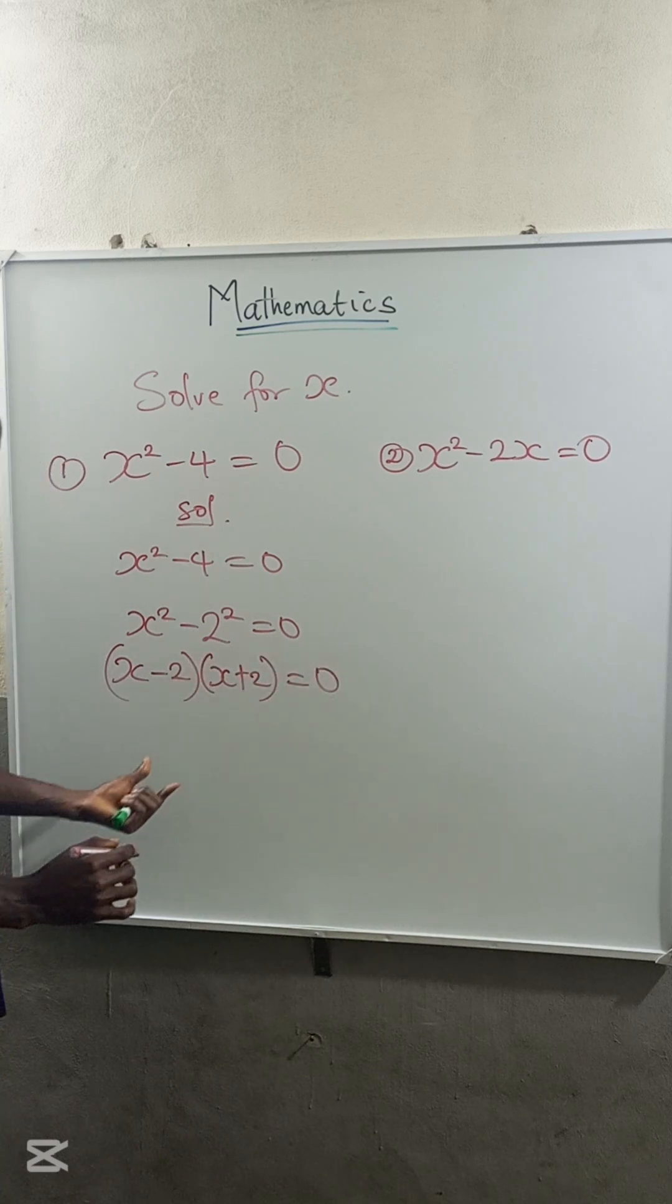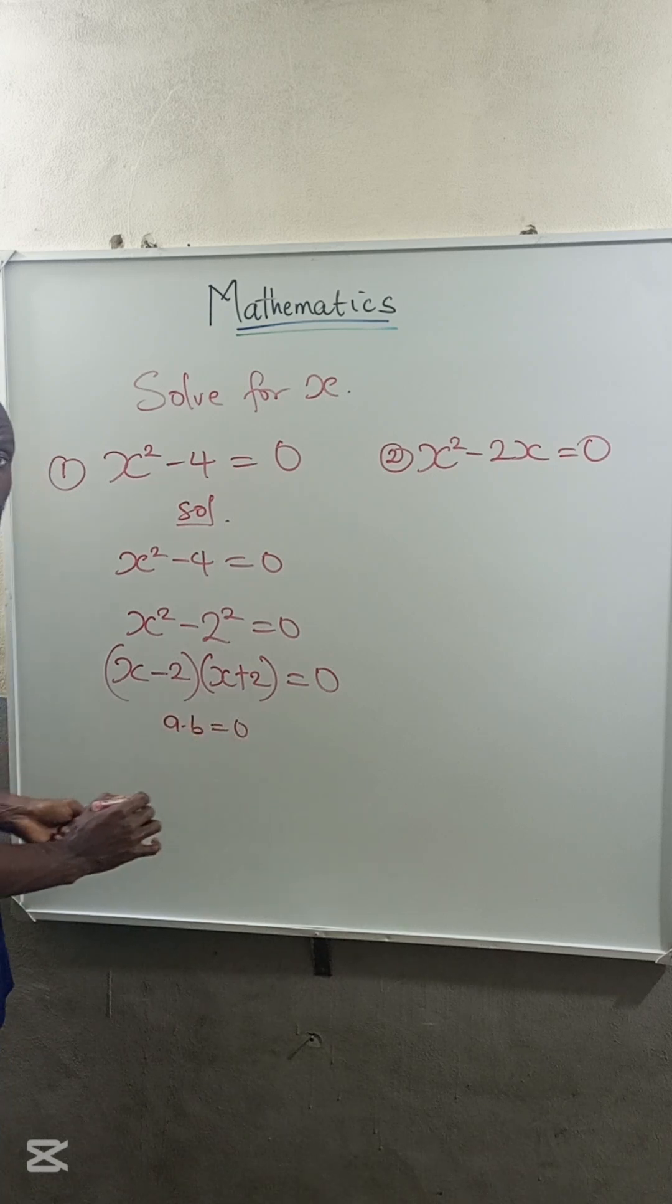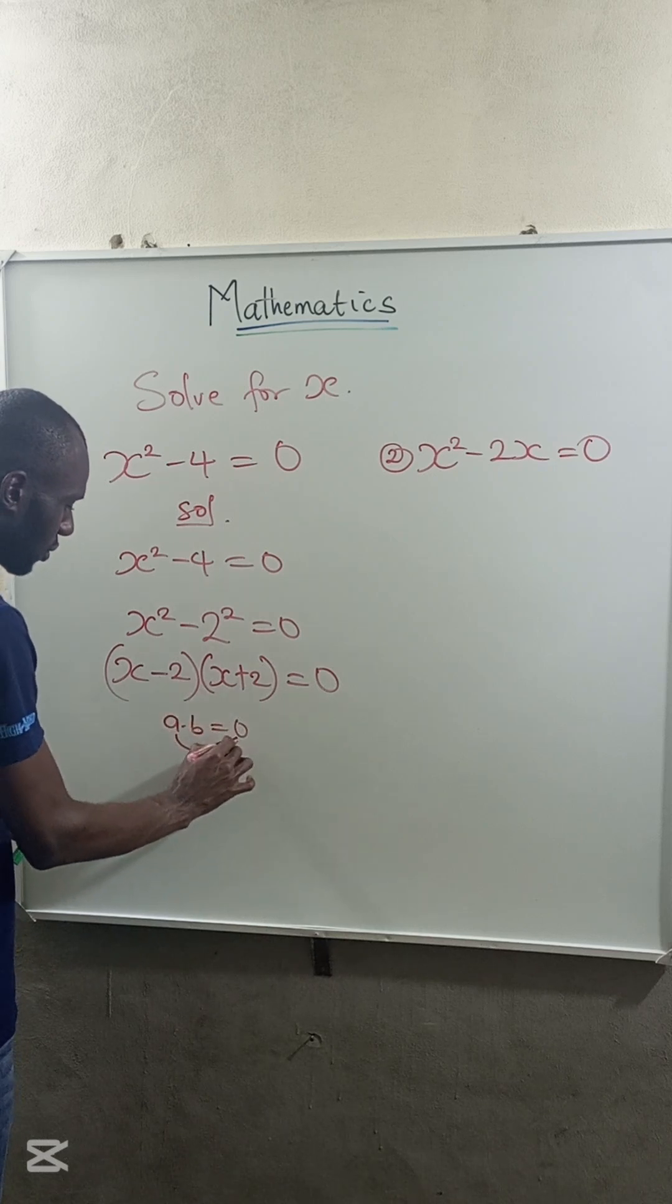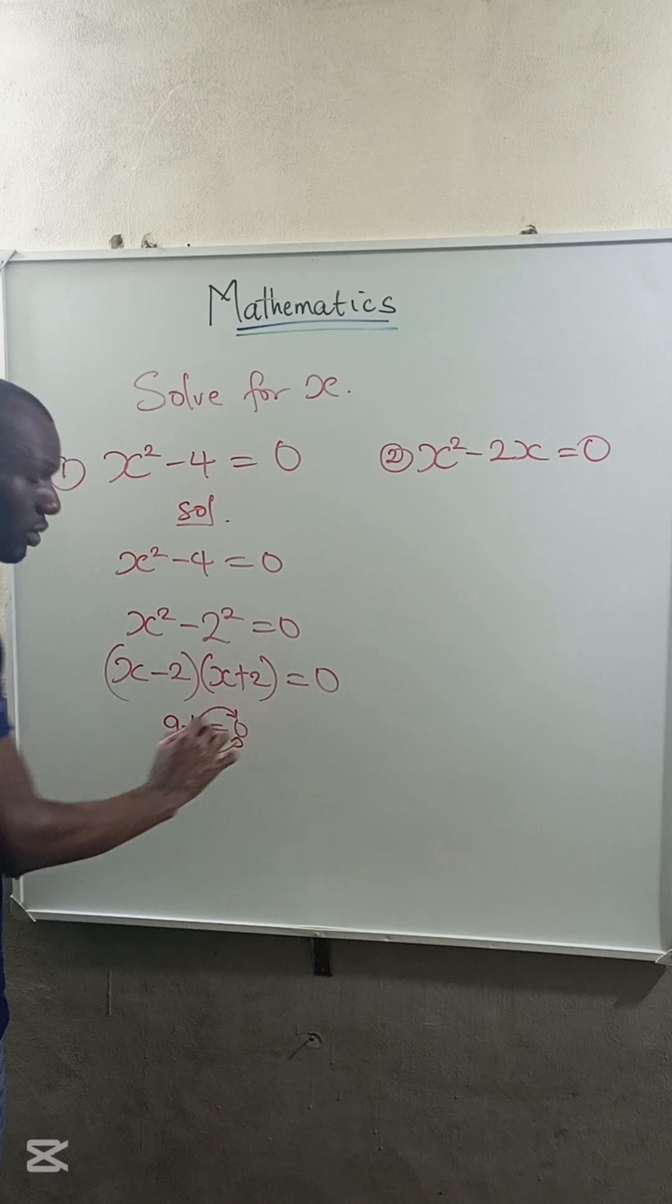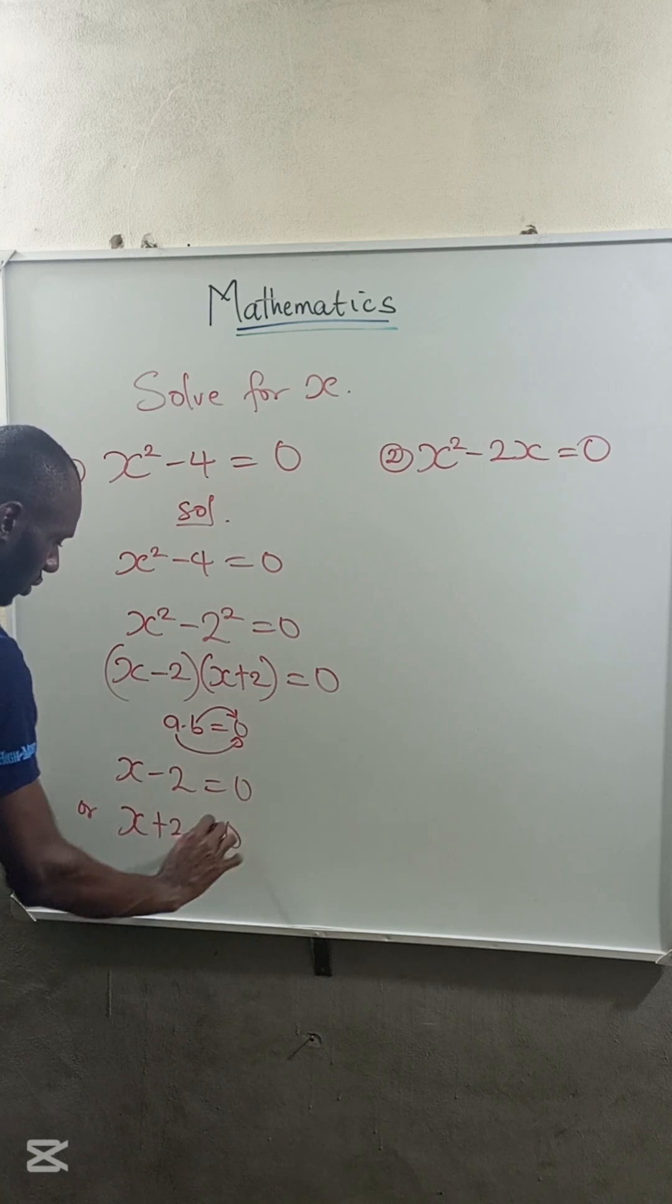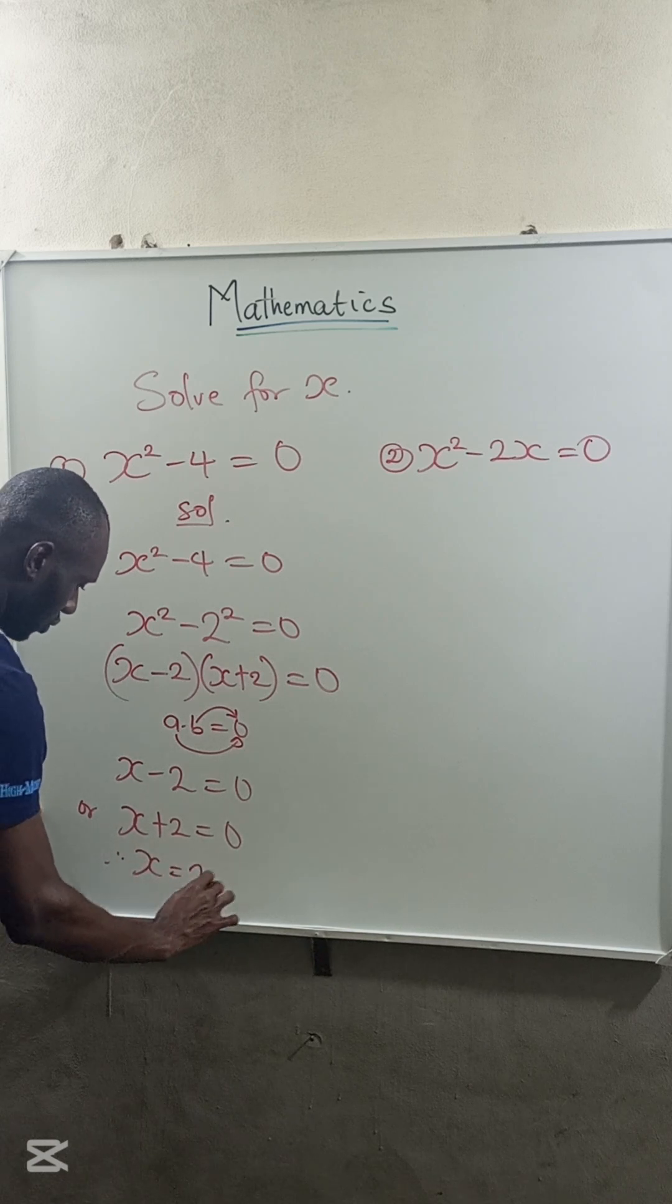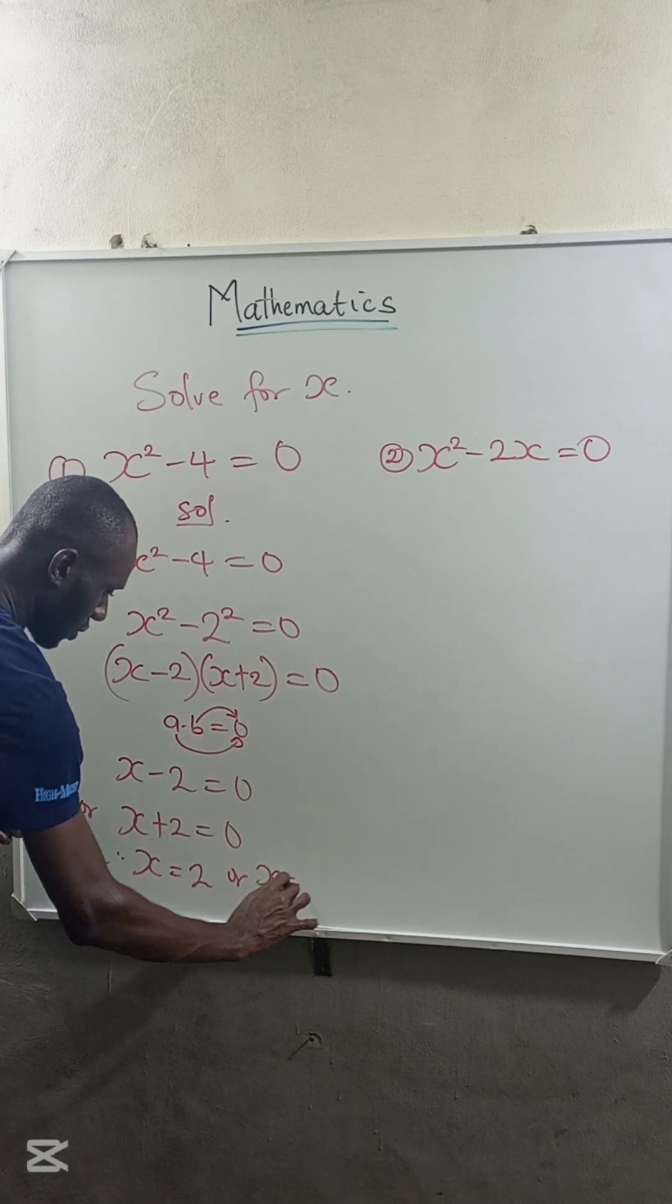So you know that if a multiplied by b is equal to 0, it's either that a is equal to 0 or b is equal to 0. So therefore, x minus 2 is equal to 0 or x plus 2 is equal to 0. So therefore, x is equal to 2 or x is equal to minus 2.